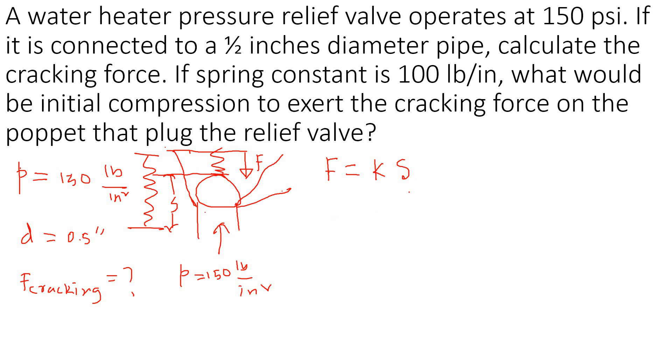We can calculate and find the initial compression. Now we have to find the force from this P. Let's say this is a cracking pressure. It didn't say anything, just to solve this problem let's assume this is the cracking pressure. We know the diameter of this pipe, which is half inch, so area would be π/4 times 0.5 squared. Let me calculate that: π/4 times 0.5 squared, so I got 0.196 square inches.